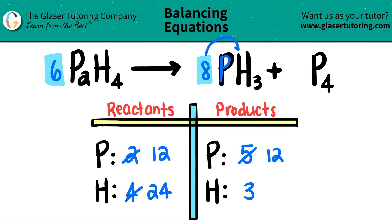And then for the hydrogen, eight times three is now 24. And look at that. There you go. This is now balanced.